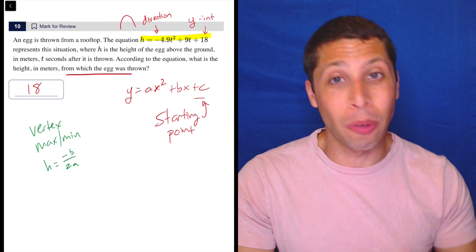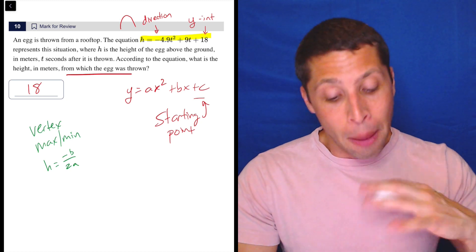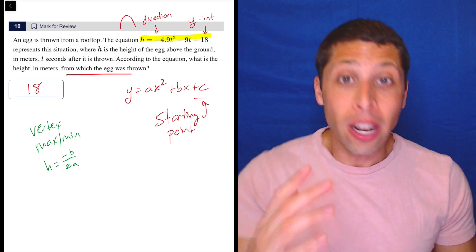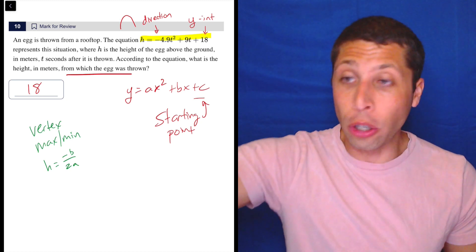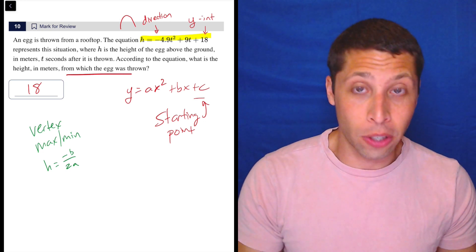We could use the h equals negative b over 2a formula to find the x-coordinate of the vertex. Then, once we have the x-coordinate, we could plug points into equations to find the y-coordinate. But they don't ask us to do that here.